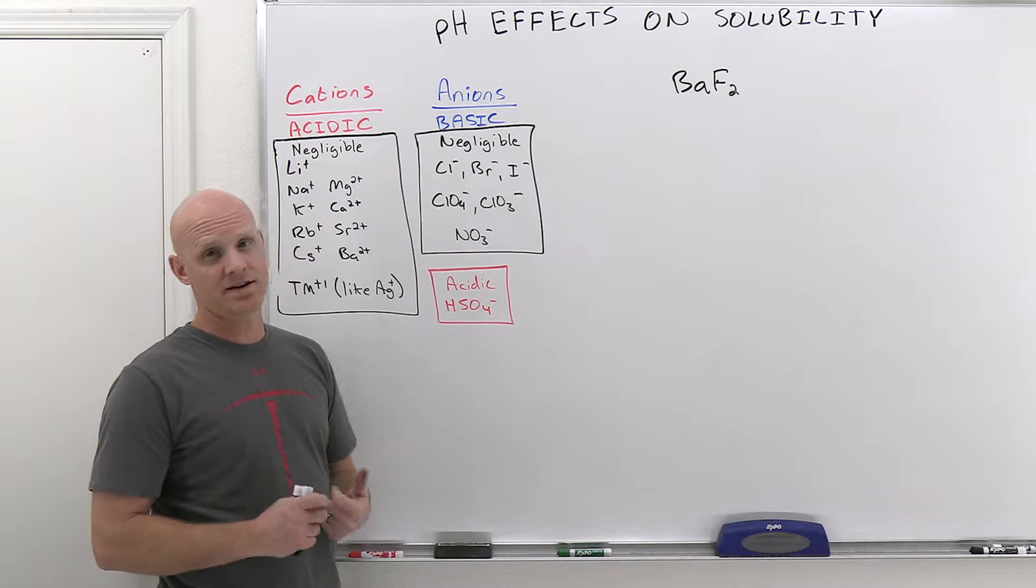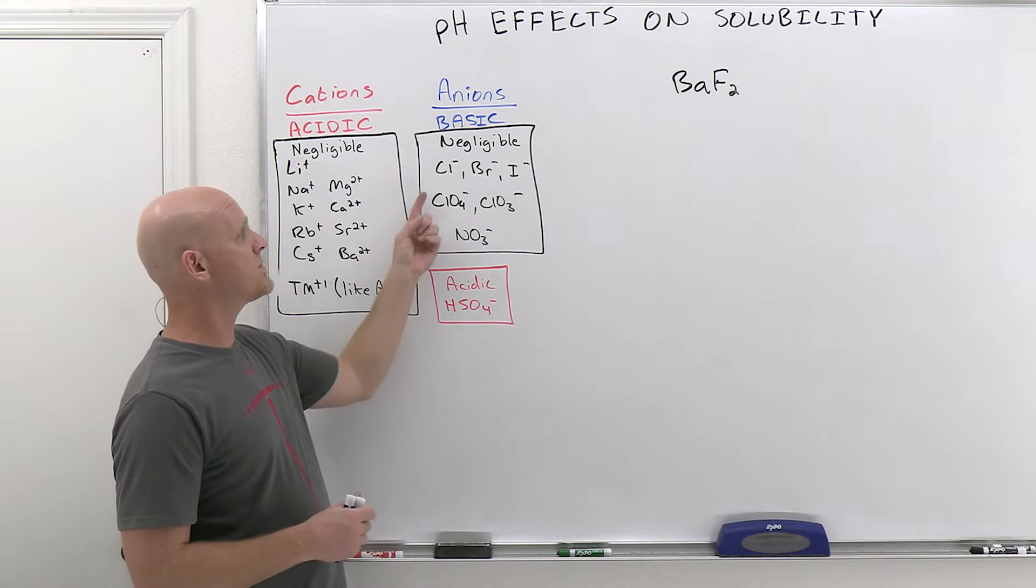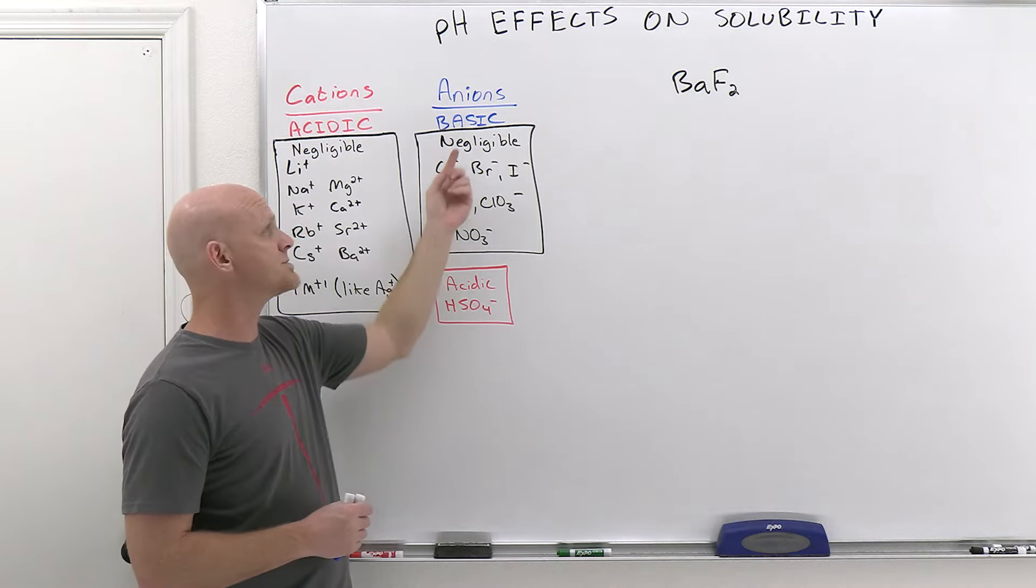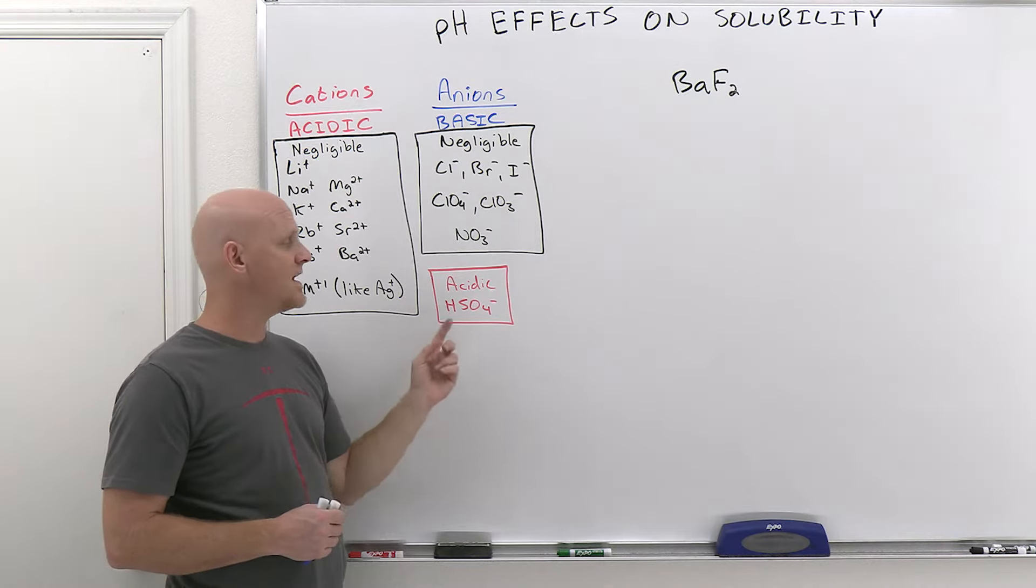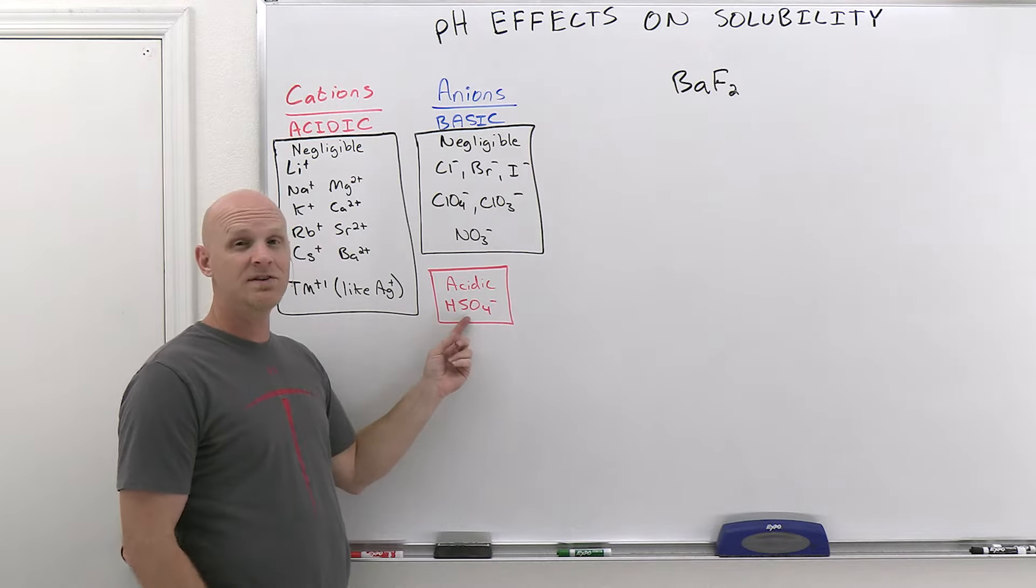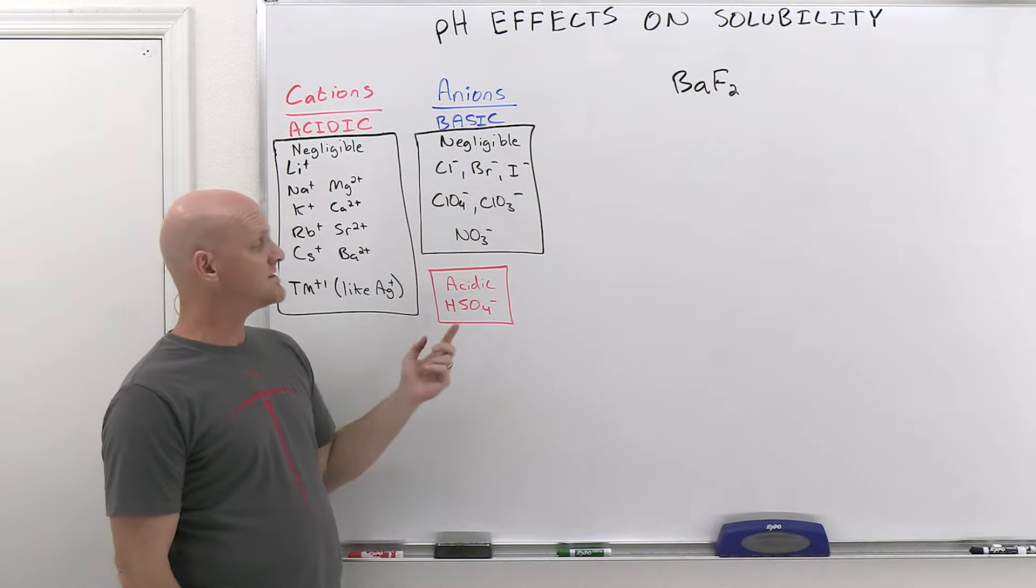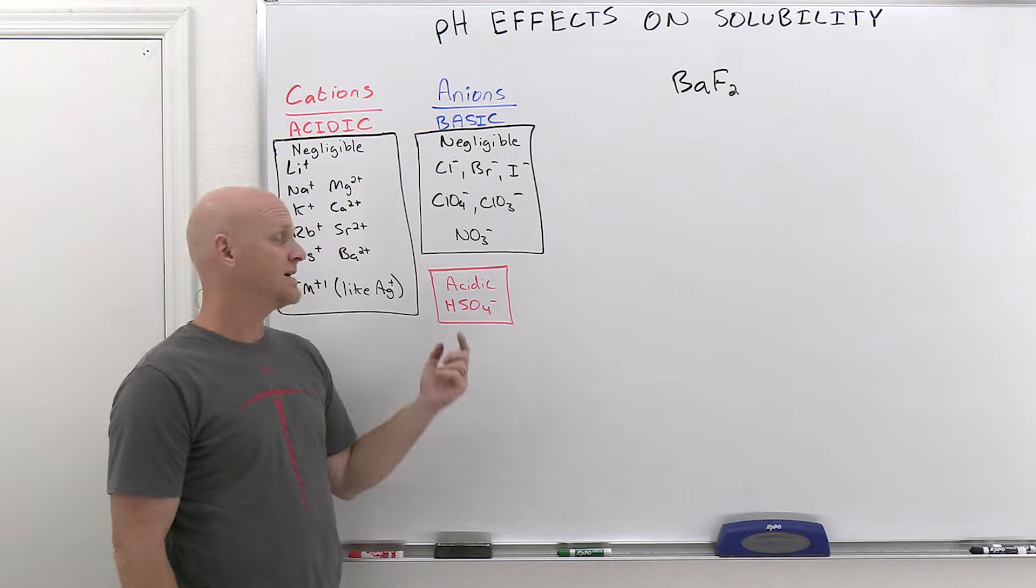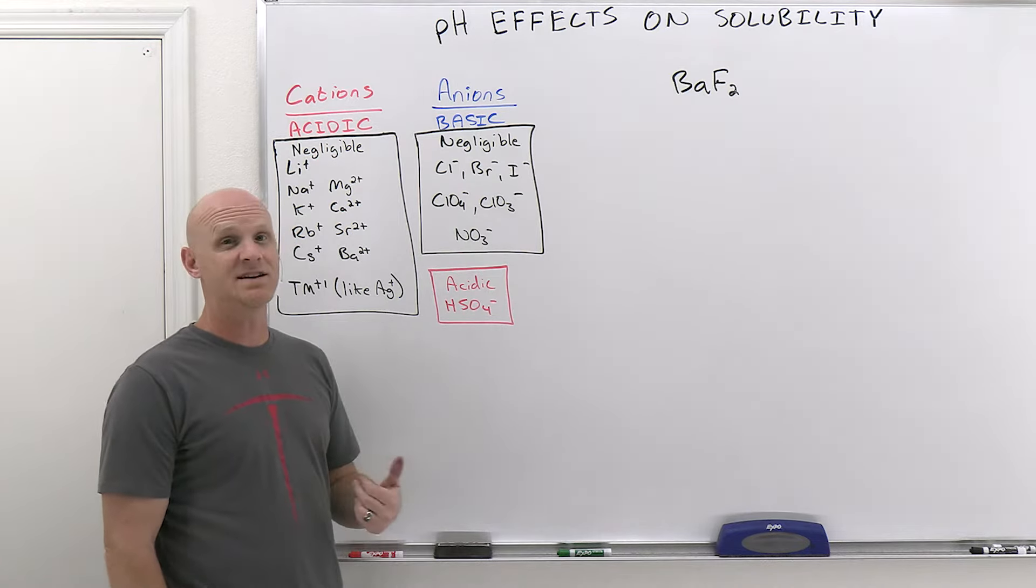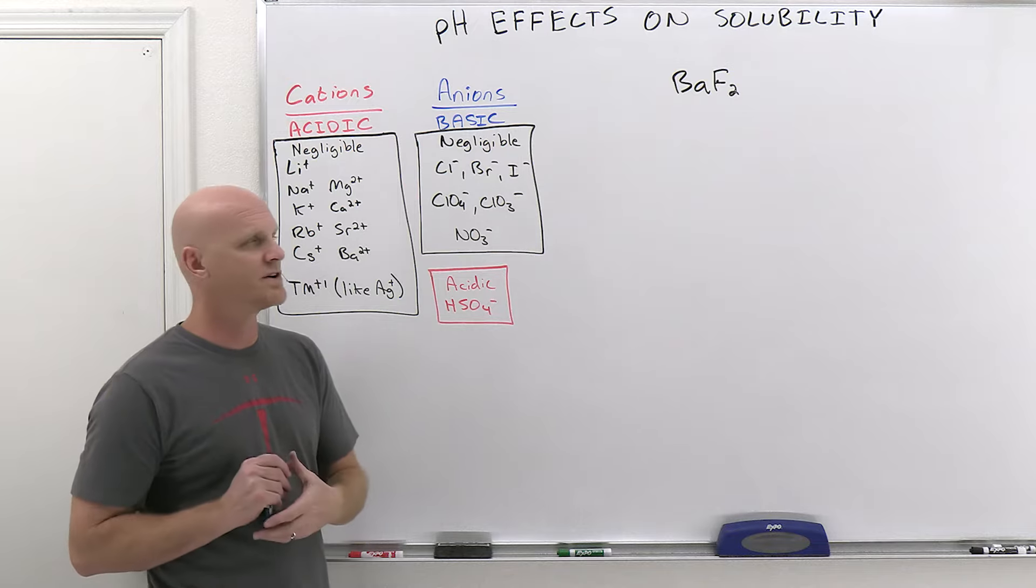Anions, on the other hand, tend to be basic, and the vast majority are basic, except for the conjugate bases of the strong acids. Most of those are negligible, with one exception, and that's HSO4-, the conjugate base of H2SO4. It turns out he's still a weak acid, so he's kind of the exception of all exceptions. As an anion, likely the only anion you're going to encounter that is actually still acidic.